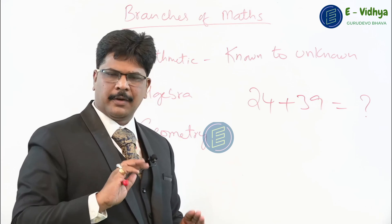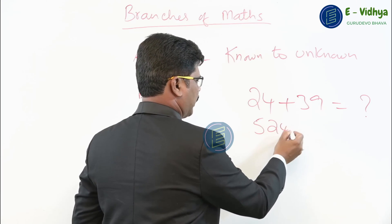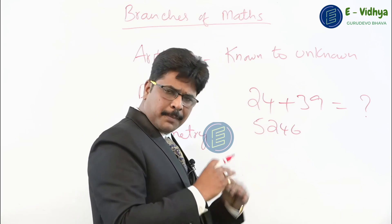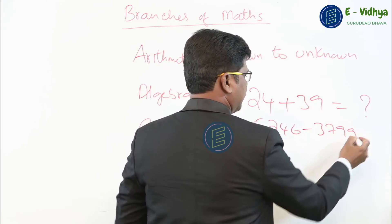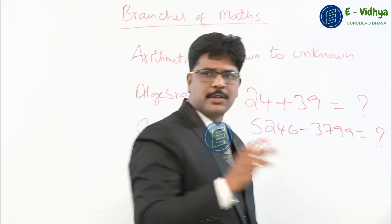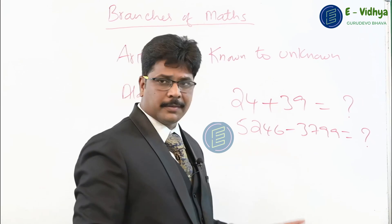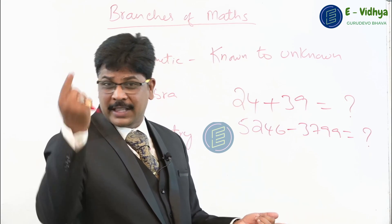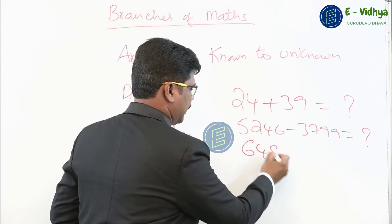For example, if I have 5,246 biscuit packets and I give away 3,799 biscuit packets to somebody, how many biscuit packets are left with me? I know both numbers, but what is the answer? I need to calculate that. Trying to calculate that is called arithmetic.